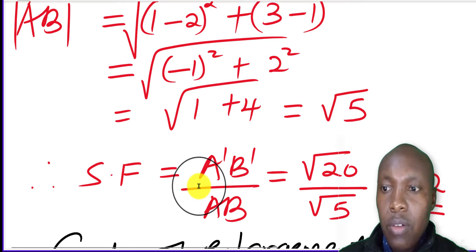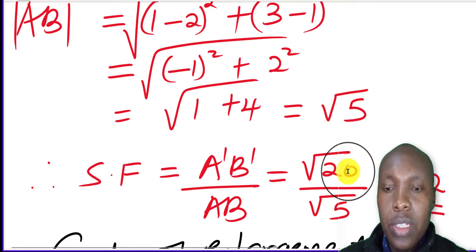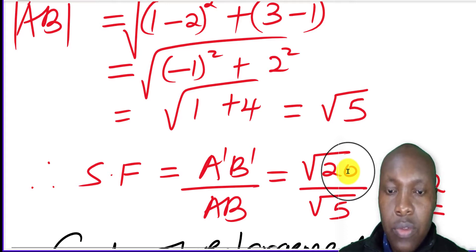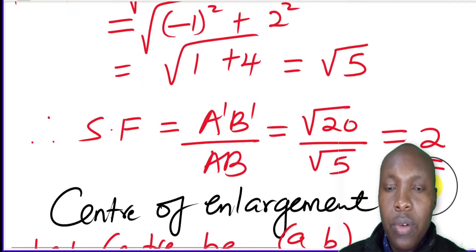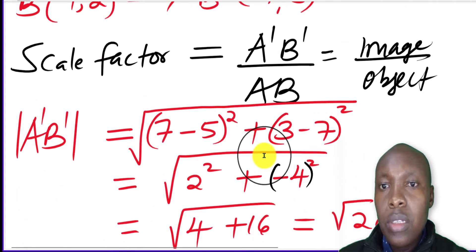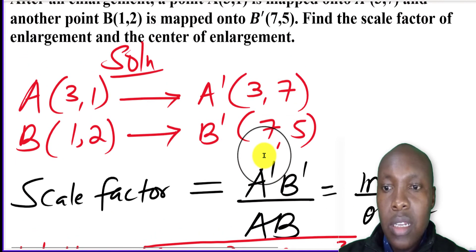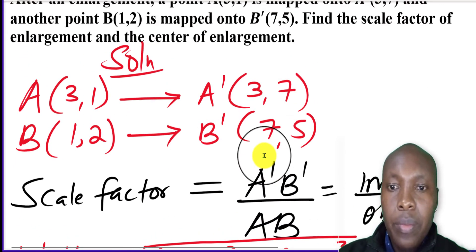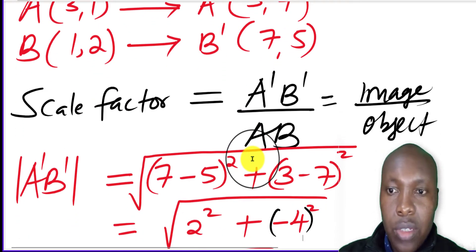Therefore, the scale factor of enlargement is given by the length of A'B' — which is root 20 — divided by the length of AB — which is root 5. When you work that out, you get 2. So the scale factor is 2. That is how we obtain the scale factor of enlargement: the image length divided by the object length.